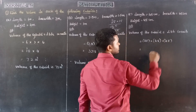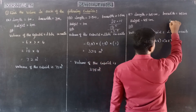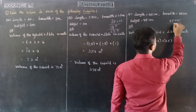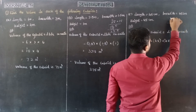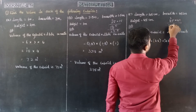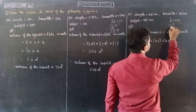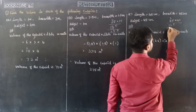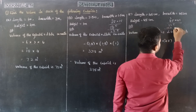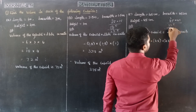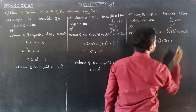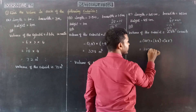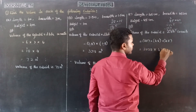So, 45 into 45. 5 times 5 is 25, remaining 2. 5 times 5 is 20, plus 2 is 22. 4 times 5 is 20, remaining 2. 4 times 5 is 16, plus 2 is 18. So, carry 5, 2. 8 plus 2 is 10, remaining 1. So, 2025. Again, multiply by 45.